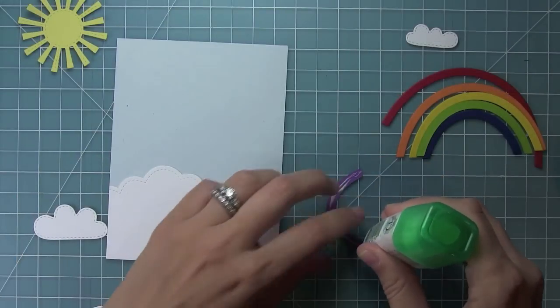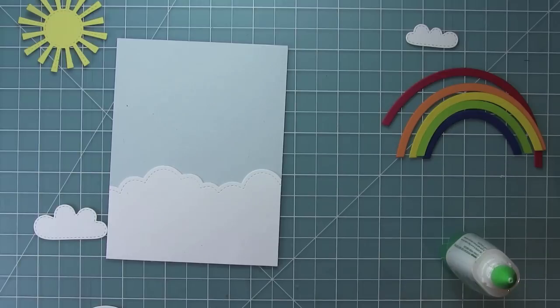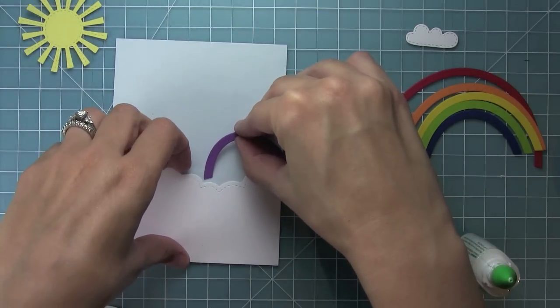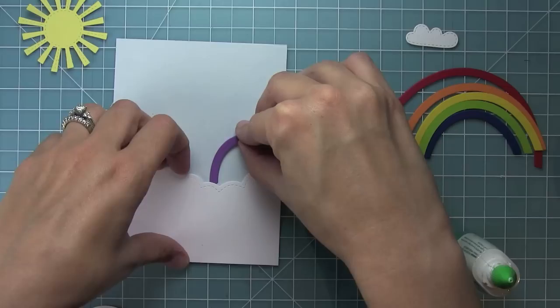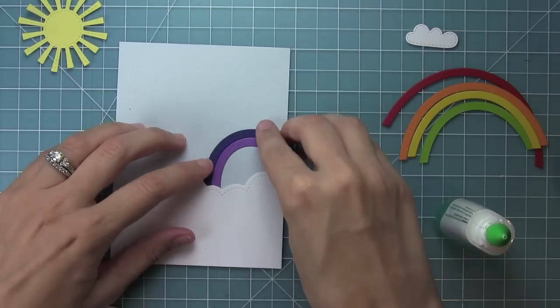Now I'm going to start with the smallest part, the purple part of my rainbow, because I want to make sure that the smallest part both goes inside of the clouds and off of the edge of the cardstock. So I need to start with the smallest one and let all the other pieces then fit into that, and that kind of dictates the angle of my rainbow.